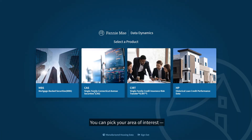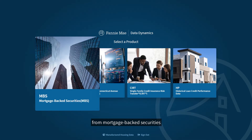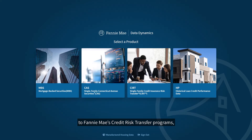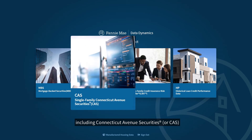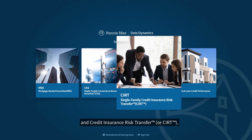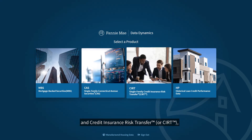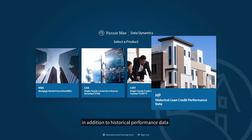You can pick your area of interest from mortgage-backed securities to Fannie Mae's credit risk transfer programs, including Connecticut Avenue Securities, or CAS, and Credit Insurance Risk Transfer, or CERT, in addition to historical performance data for both single-family and multi-family loans.